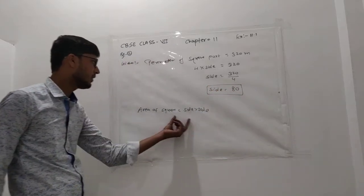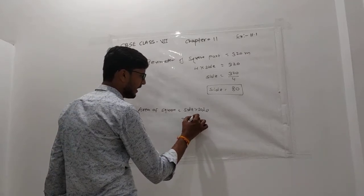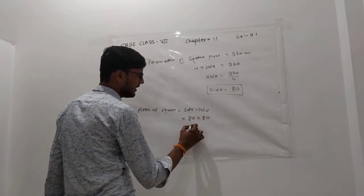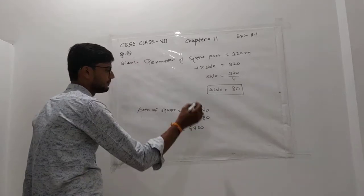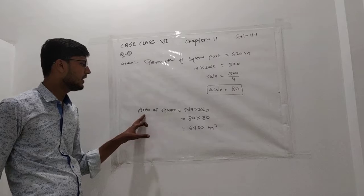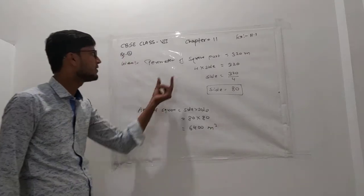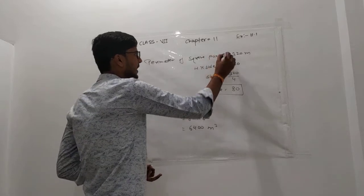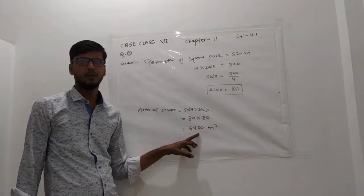Now put the value of side. Area of square is side into side, which means 80 into 80. 80 multiplied by 80 equals 6400. So area is 6400 meter square. Area of square plot is 6400 meter square.